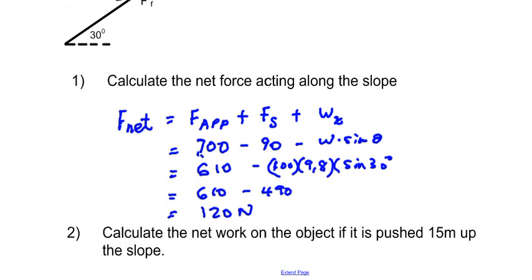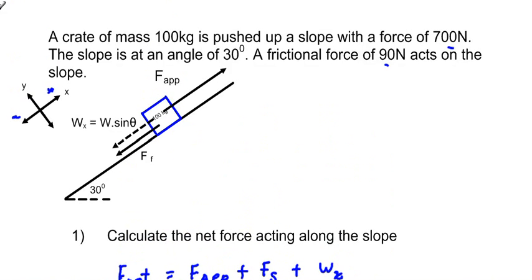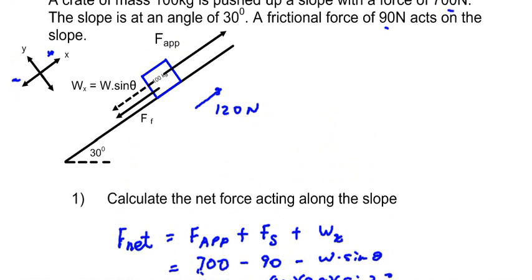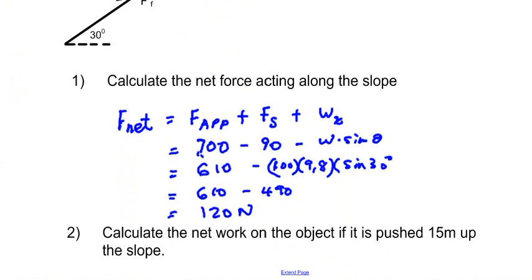Although the person is applying a force of 700 newtons, only 120 newtons is used to push the object up the slope. It is important to recognize the forces acting in the parallel direction — those pushing the object up and down the slope — as this helps in calculating the work done on the object.